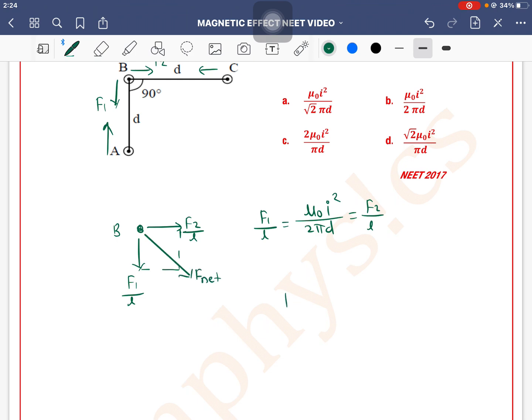So net force will be equal to, by using Pythagorean theorem, under root of F1 by L square plus F2 by L square. As both values are the same, so this answer is under root of 2 F1 by L. Mu naught I squared divided by 2 pi D.